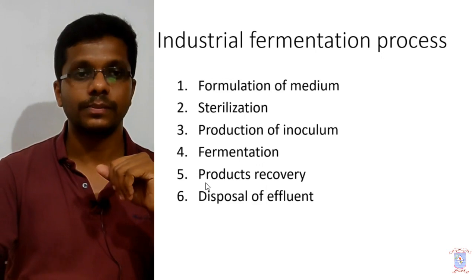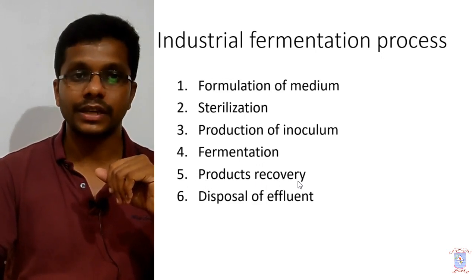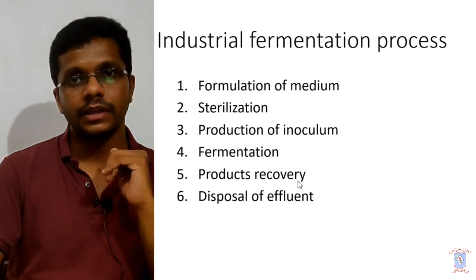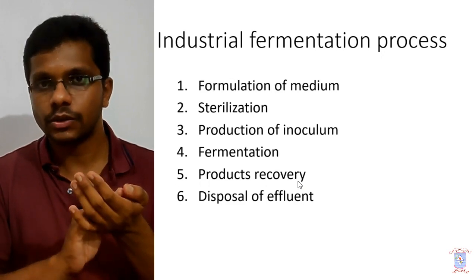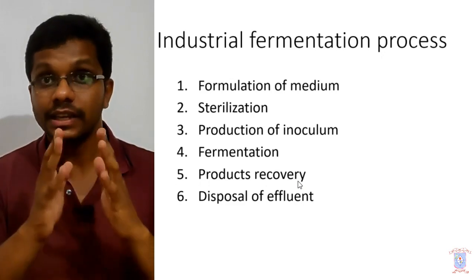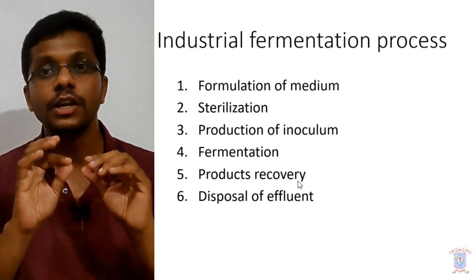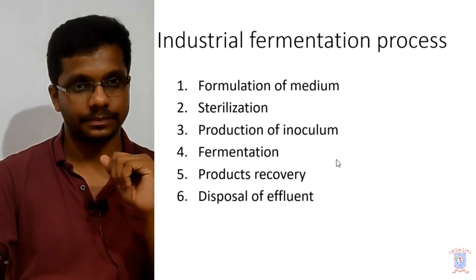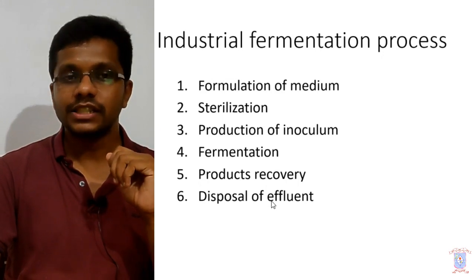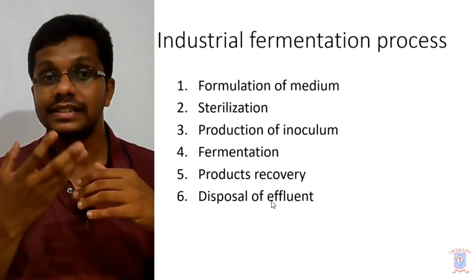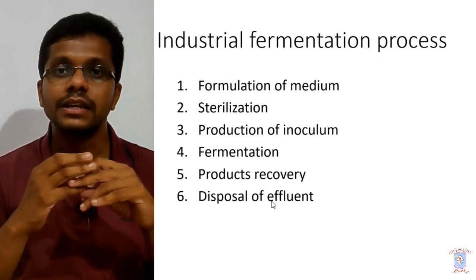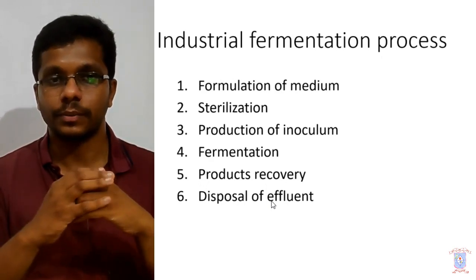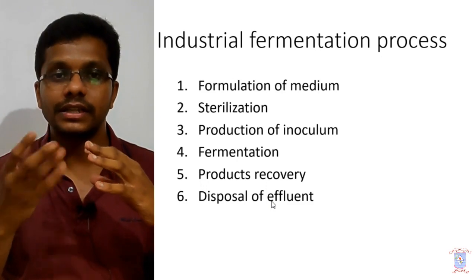Once the fermentation is over, we move into the downstream process. First we have product recovery — we isolate the product and then purify it. The extent of purification depends entirely on the end use. For example, if you are making fuel ethanol, you do not need super-purified ethanol; but if you are making ethanol for pharmaceutical purposes, it must be strictly purified. So in product recovery we isolate the product, purify it, then proceed to formulation and packaging. Finally we have disposal of effluent: some effluent can be recycled or reused; in other cases we can make byproducts from the effluent like cattle feed and fertilizers; and if recycling or byproduct formation is not possible, we treat the effluent before releasing it into the environment.